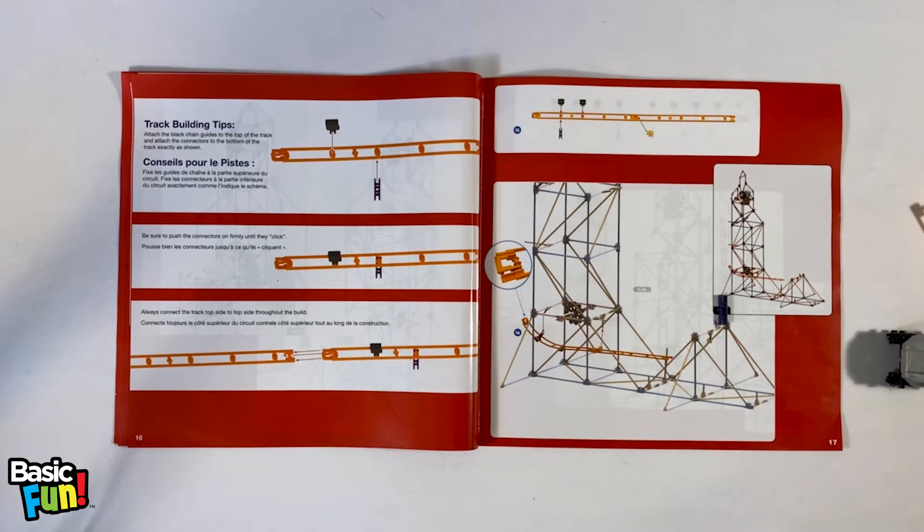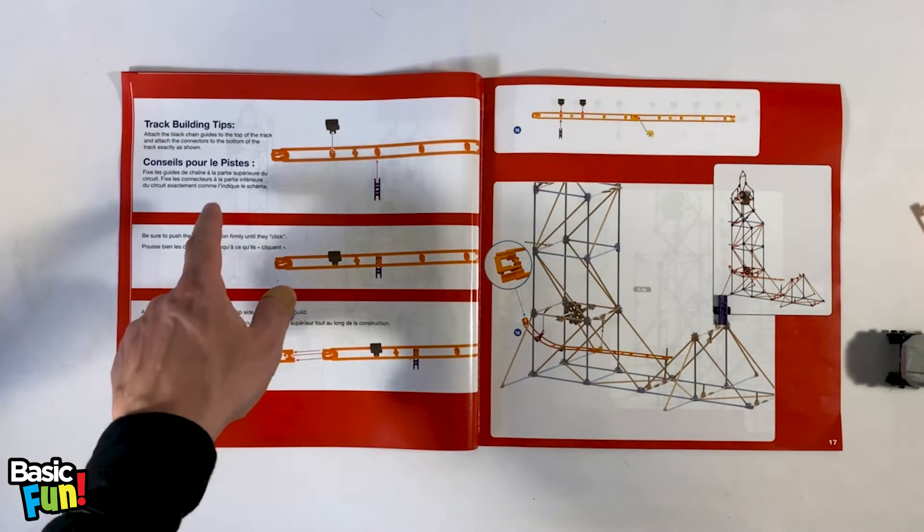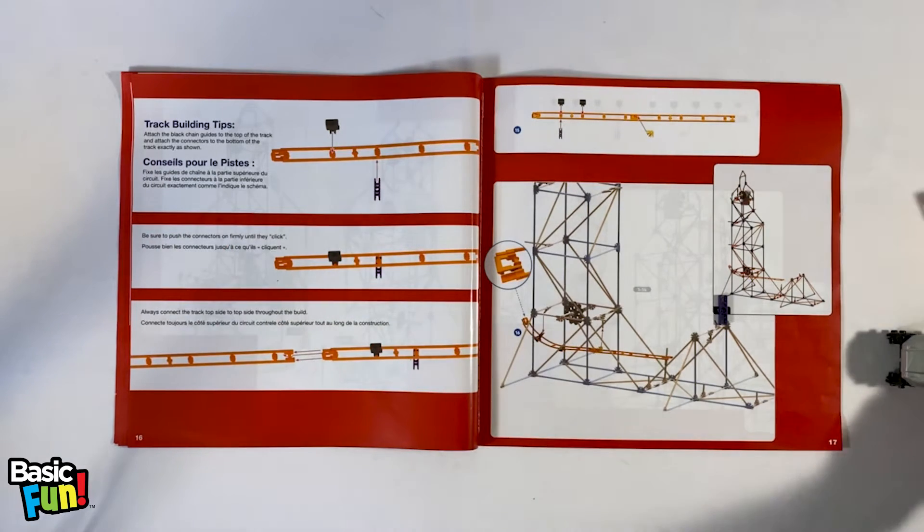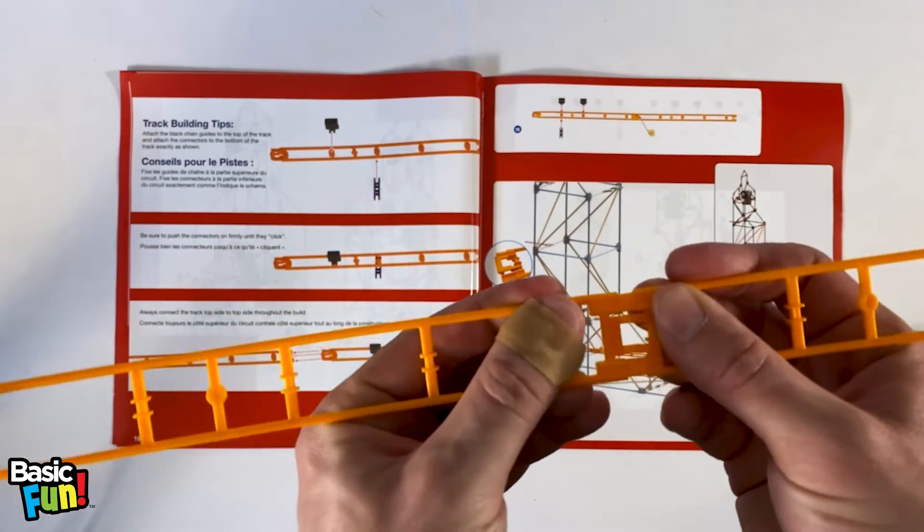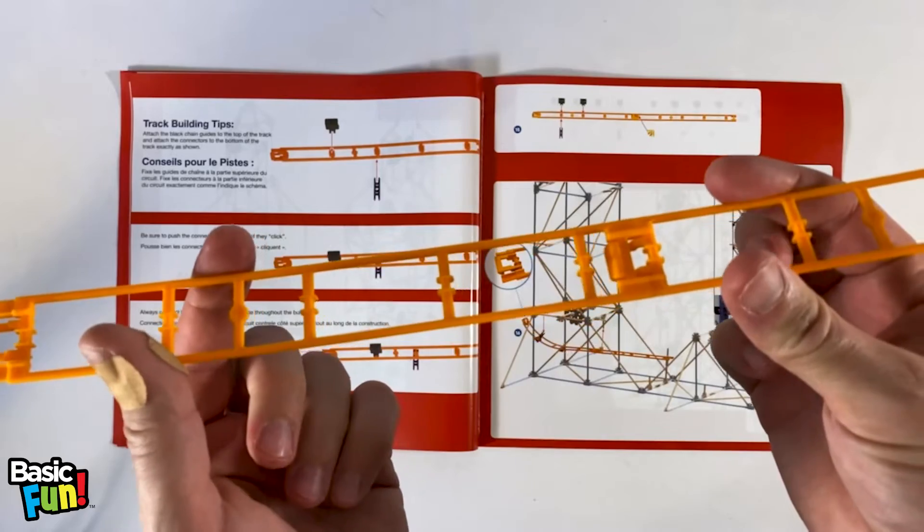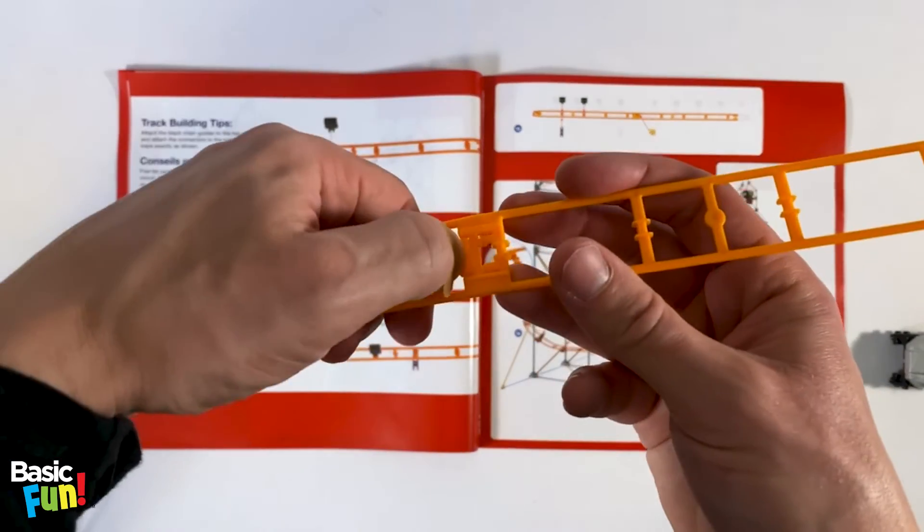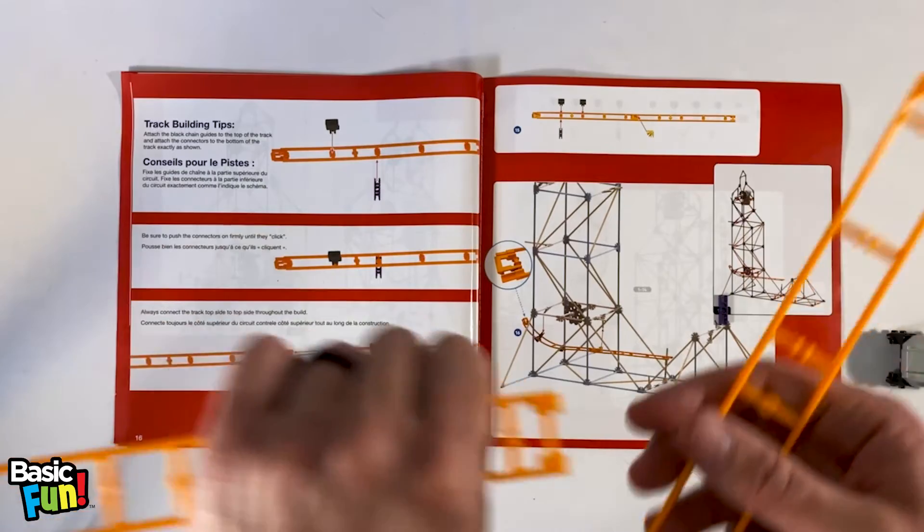So before we start connecting the track to the frame of the coaster, these are a few really good track building tips on this page here. Whenever you're connecting a piece of track to another, you're just going to connect them end to end just like so. And you'll hear that snap. To disconnect the track, just press down with your thumb and then pull it apart.